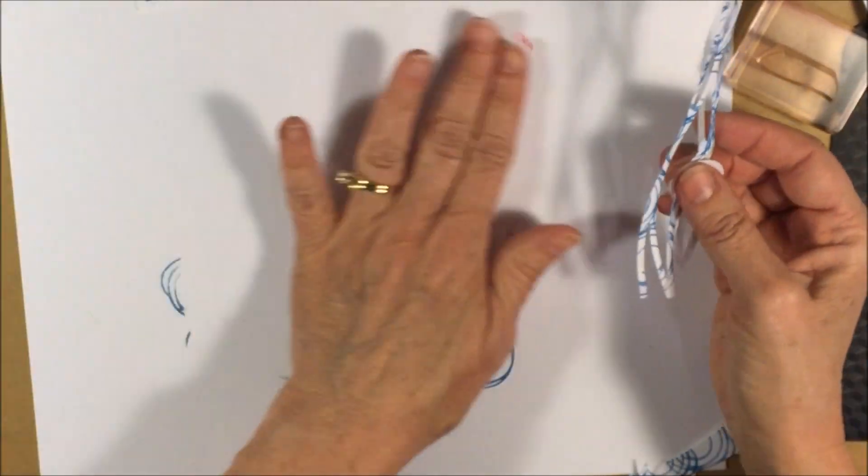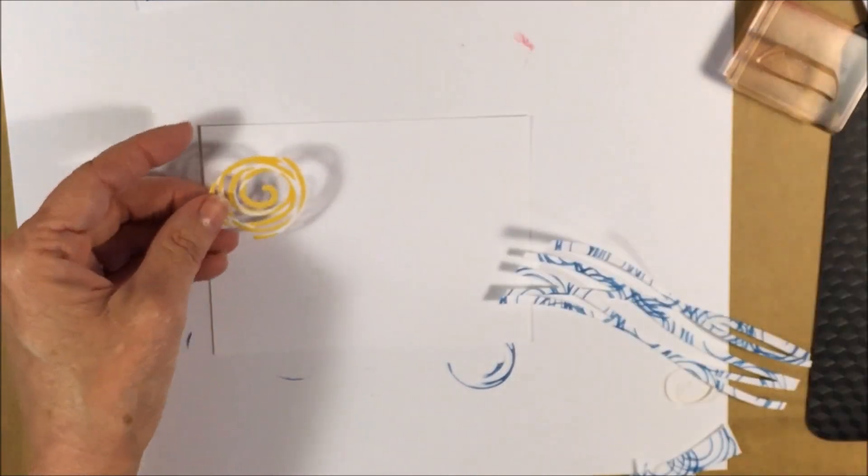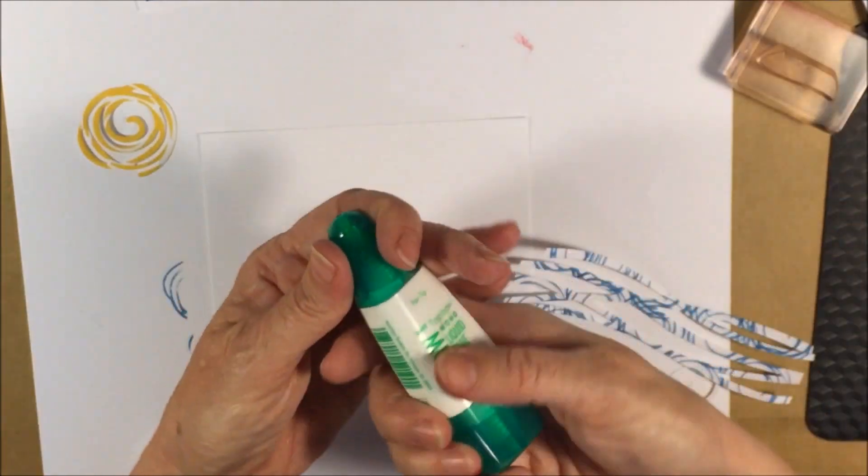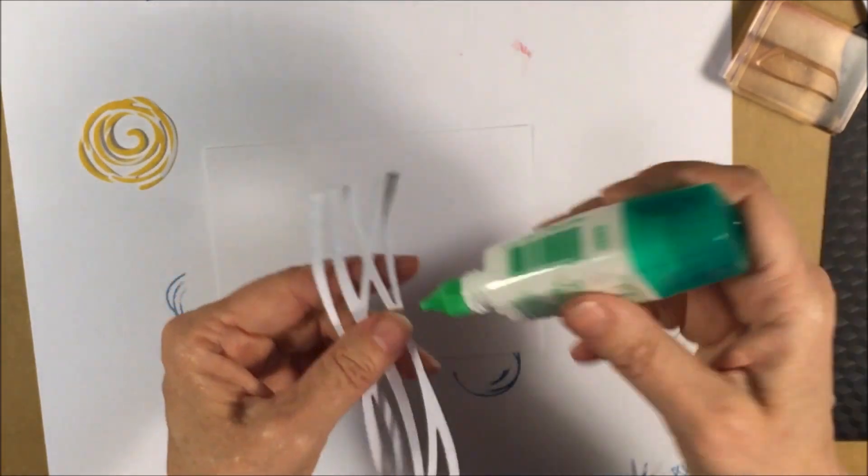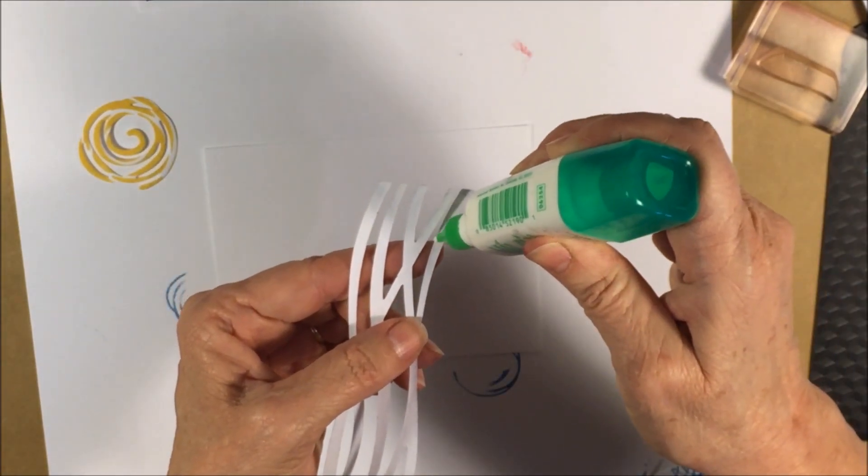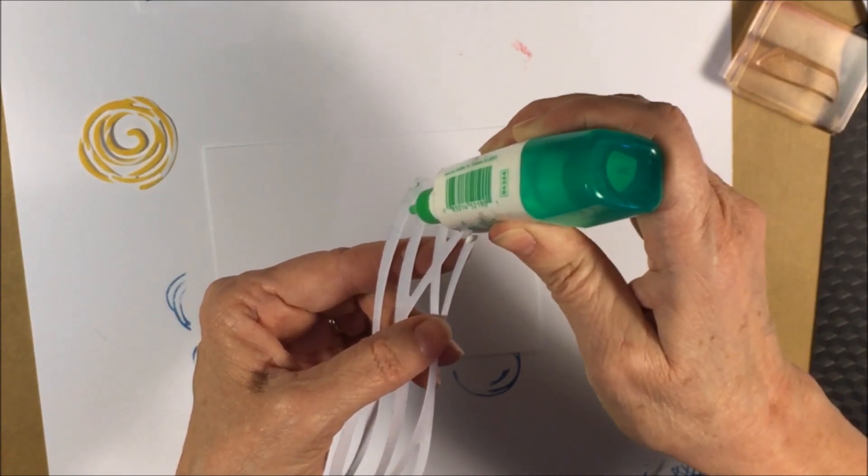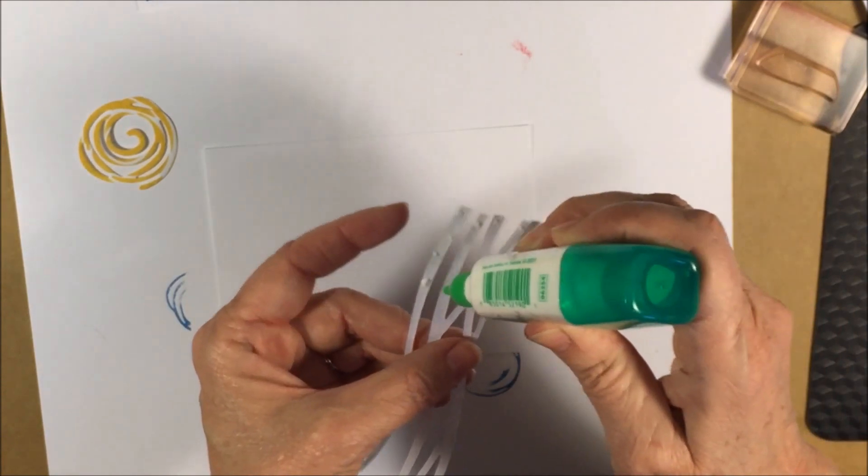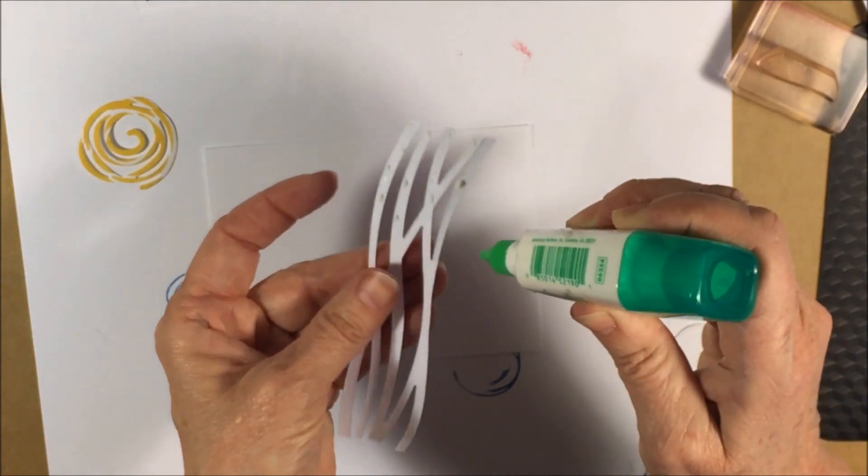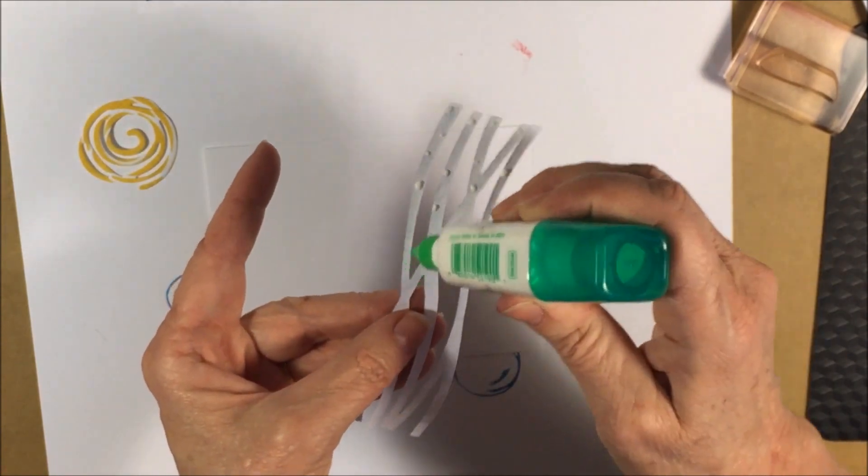And what I did was I used my Tombow glue and I just added little dots of glue on the back everywhere. And like I said, you want this to be at least five inches wide. If it's a little bit over, that's good because then you can just trim it. So we're just going to add some glue all along.